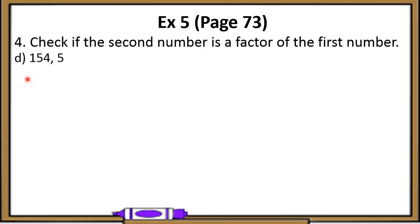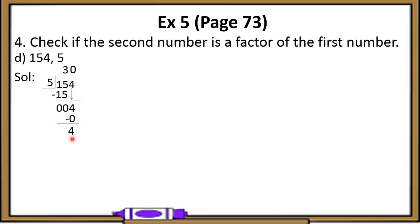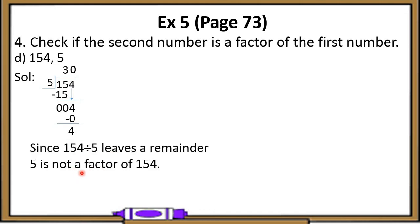Now let's look at the next part. The numbers given are 154 and 5. When you divide 154 by 5, there is a remainder of 4. So since 154 divided by 5 leaves a remainder, 5 is not a factor of 154.